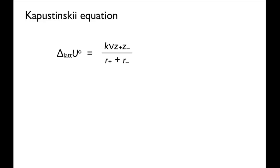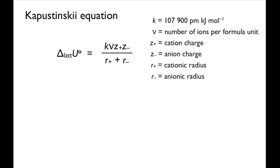In the Kapustynski equation, K is a constant with a value of 107,900 picometers kilojoules per mole. Nu is the number of ions in the formula unit, which is 2 in this case. Z-plus is the cation charge, which is 1. Z-minus is the anion charge, which is 1. R-plus is the cationic radius, and R-minus is the anionic radius.